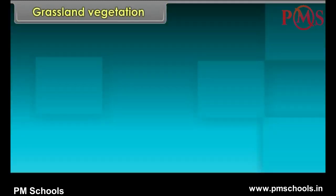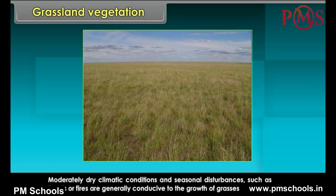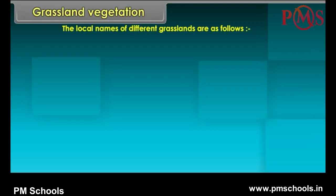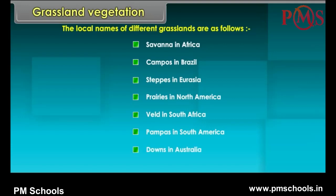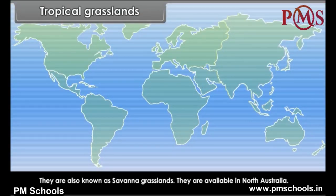Grassland Vegetation. A land where grass-like vegetation grows and is the dominant form of plant life. Moderately dry climatic conditions and seasonal disturbances such as floods or fires are generally conducive to the growth of grasses and prohibitive of trees and shrubs. The local names of different grasslands are: Savannah in Africa, Campos in Brazil, Steppes in Eurasia, Prairies in North America, Veld in South Africa, Pampas in South America, Downs in Australia. There are two types of grasslands: tropical grasslands and temperate grasslands.